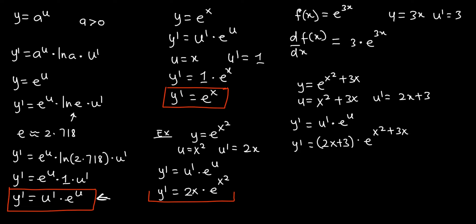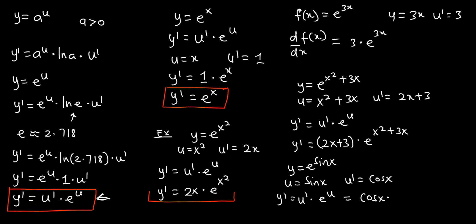Here is another example where y equals e to the power sine x. In this case, u equals sine x, and u' equals cosine of x. So y' equals u' times e to the power u, which gives us cosine of x times e to the power sine x. That is the answer for this example. This is how to find the derivative of an exponential function where the base is Euler's number. Thank you very much for watching this video — please like and subscribe.